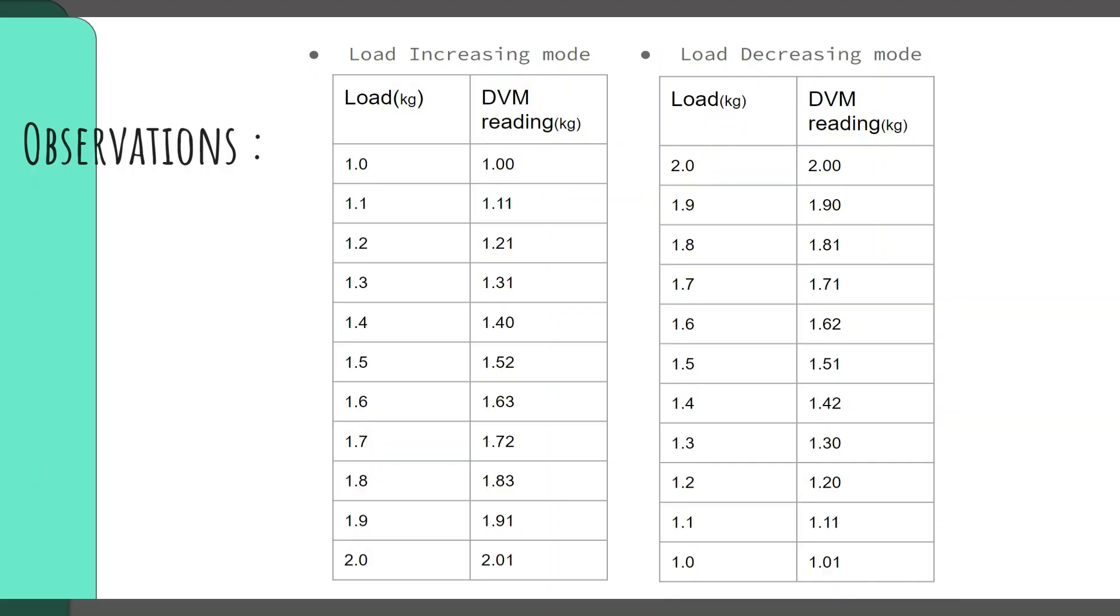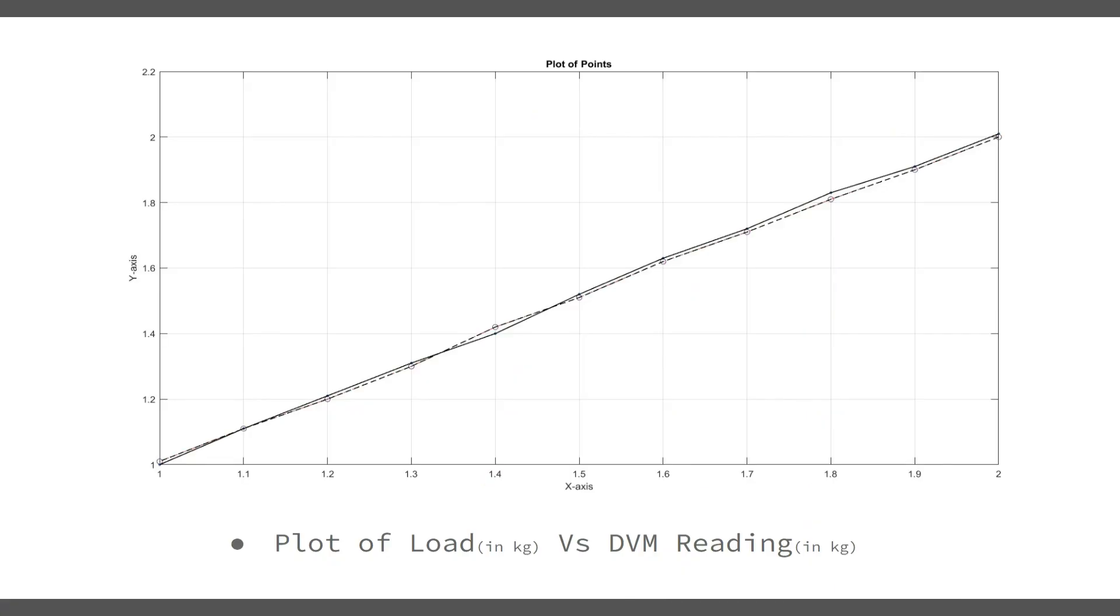Now moving forward into observations. These are the readings we got while increasing the load and decreasing the load. This is the linear plot we could get from the respective readings. We see that we plotted both for loading and unloading values.